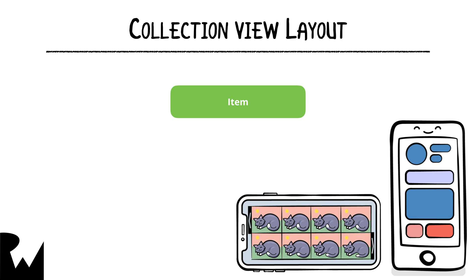An item can be a photo, a button, or any kind of view, but ultimately it lives inside of a cell or a supplementary view. Don't worry, we'll cover what those are later on.